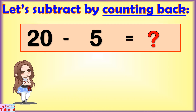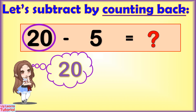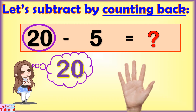Let's subtract 20 minus 5. First, put the minuend, or the bigger number, in your head. That is 20. Put the subtrahend on your fingers. That is 5. Then, count back from 20.